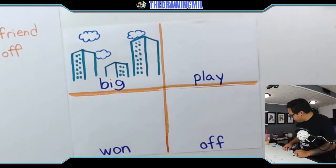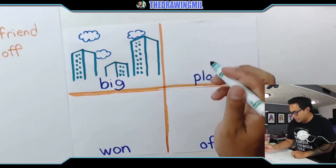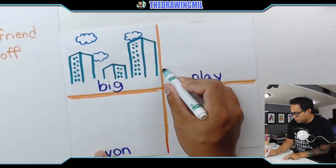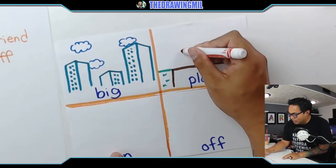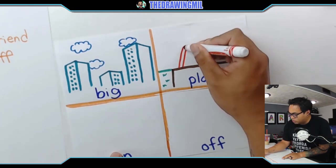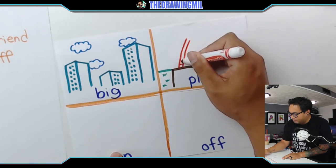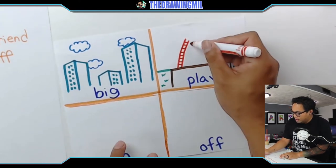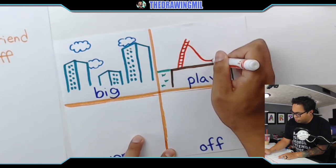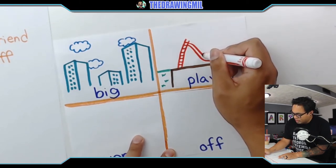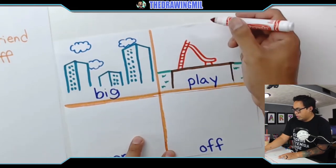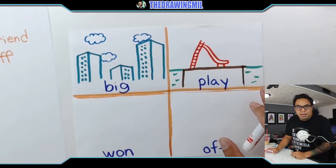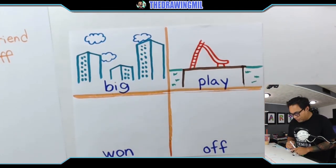So the next word is "play". The most obvious thing is a playground. I'll create the ground first and then draw a slide - a ladder going up and then a slide coming down, connected to the ground. And if you want to draw a person on there, you can. Or if you have another idea for "play", such as drawing someone playing baseball, you can do that too.